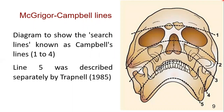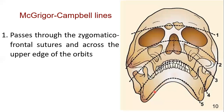In this diagram you can see Campbell's lines. That is the first Campbell line, that is the second one, that is the third one, this is the fourth one, and this fifth one is the Campbell line that was explained by Trepnel later on. We will now discuss each line in detail.